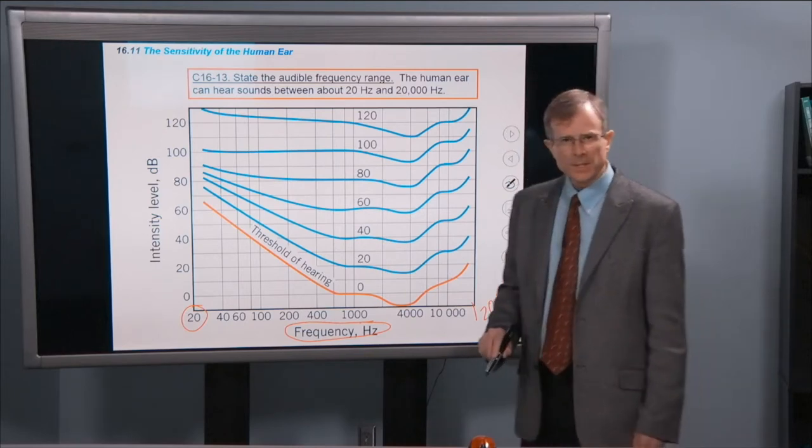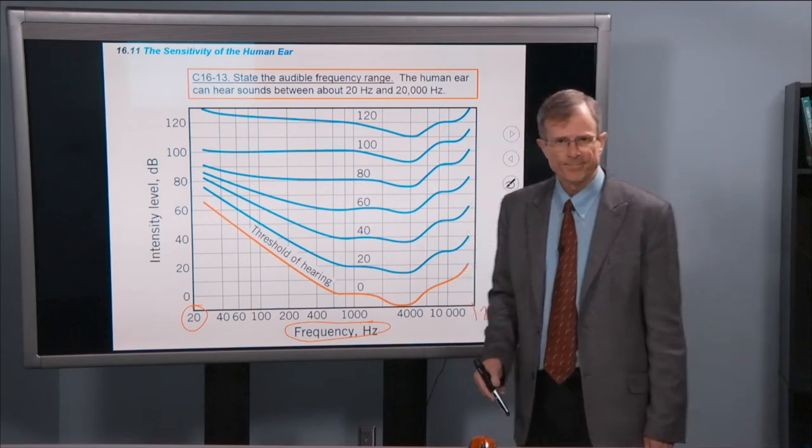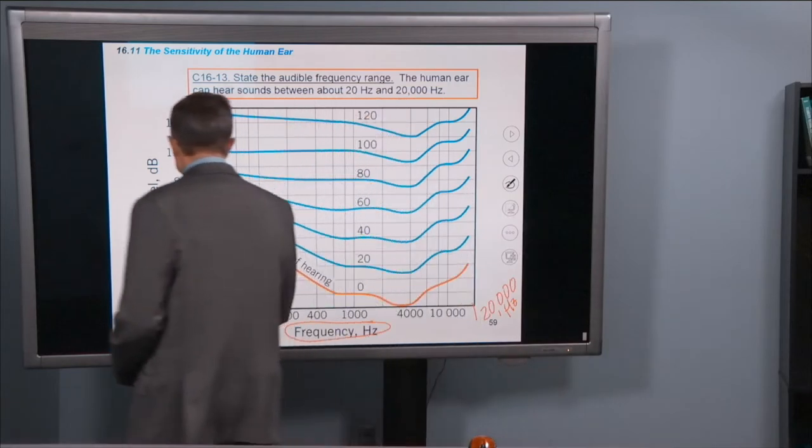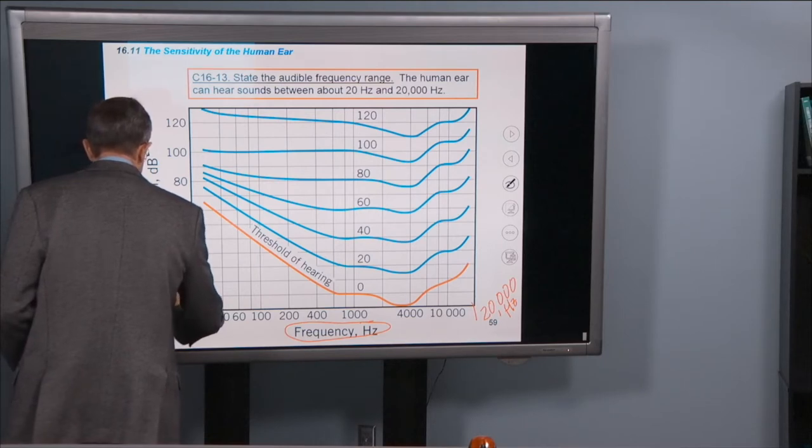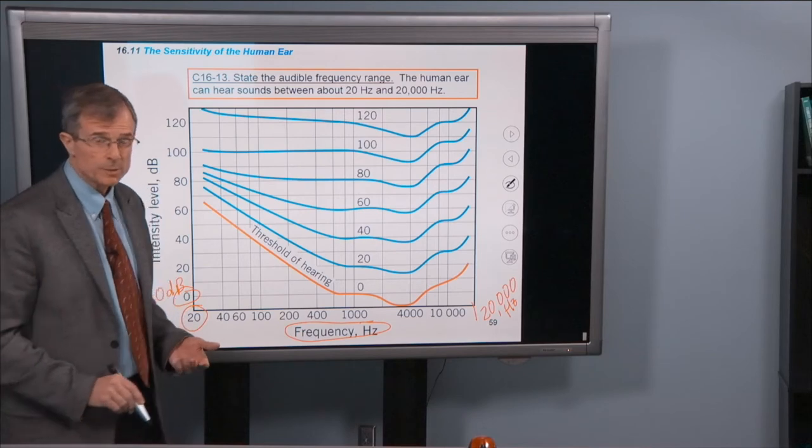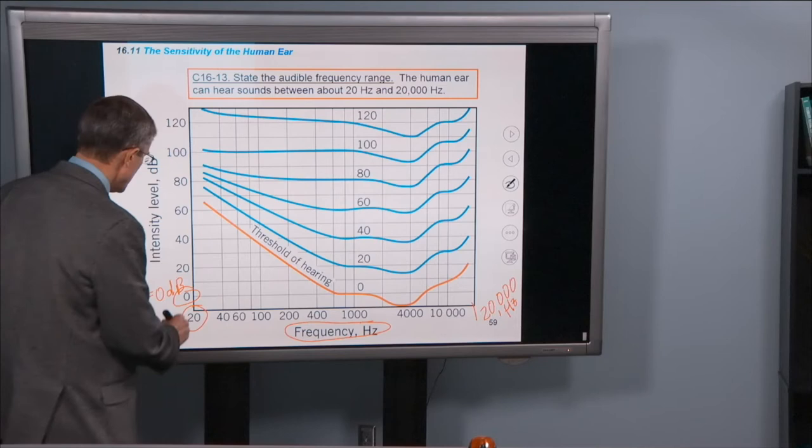The ear doesn't hear all of those frequencies with equal sensitivity. If we're going to, for example, produce a sound that's 0 dB, so that's the intensity level, beta equals 0 dB. And what intensity does that correspond to? 1 times 10 to the minus 12 watts per square meter.